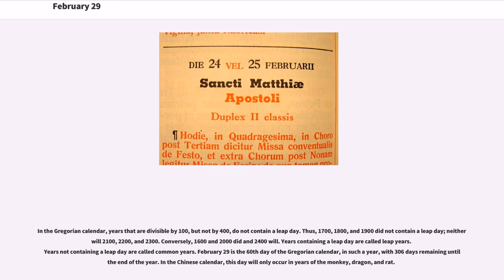Years containing a leap day are called leap years; years not containing a leap day are called common years. February 29 is the 60th day of the Gregorian calendar in such a year, with 306 days remaining. In the Chinese calendar, this day will only occur in years of the monkey, dragon, and rat.